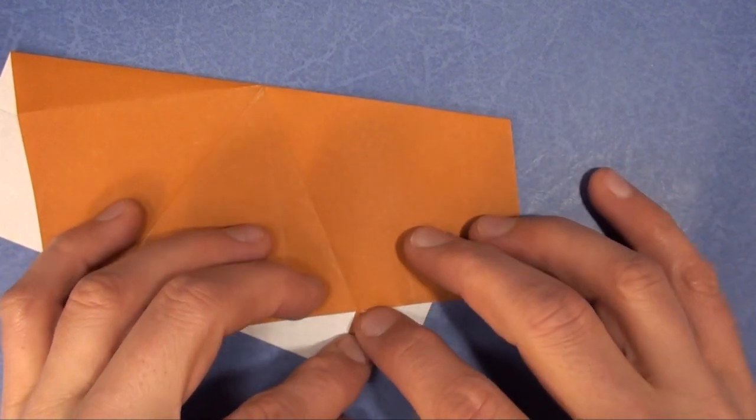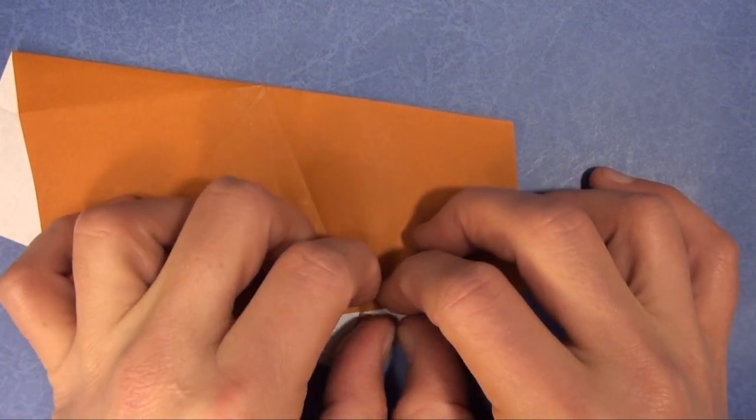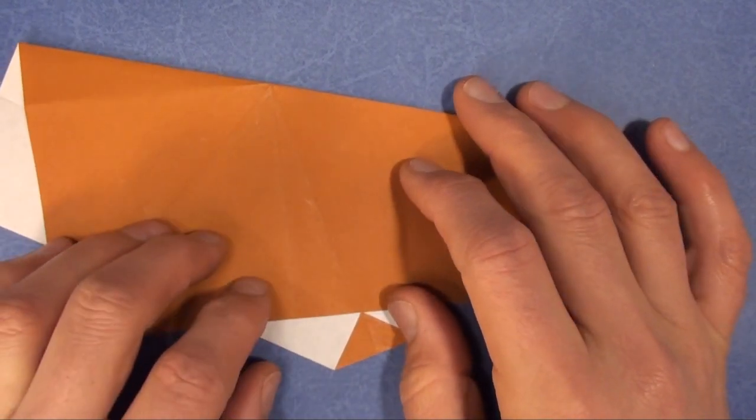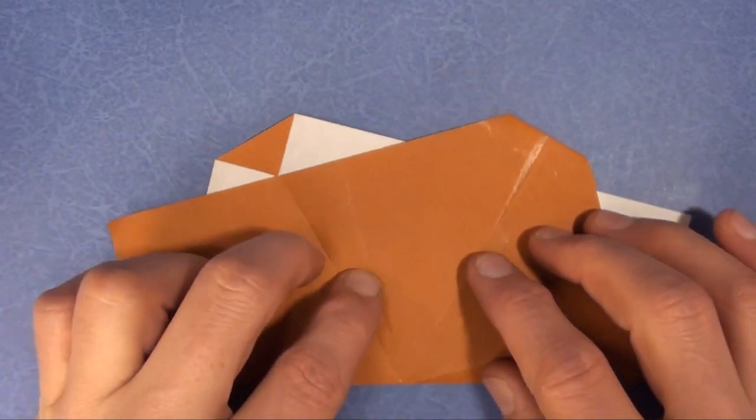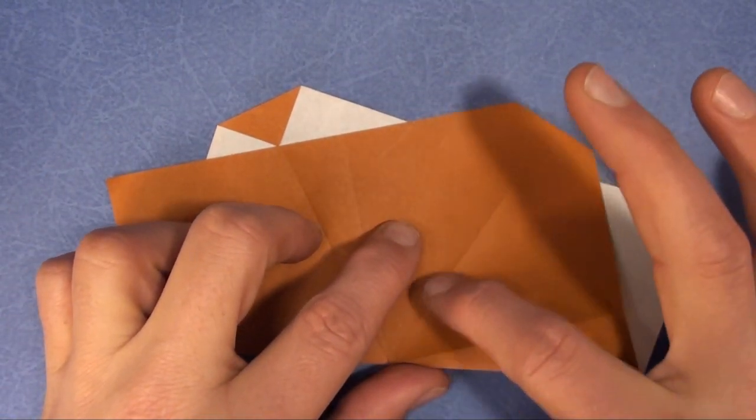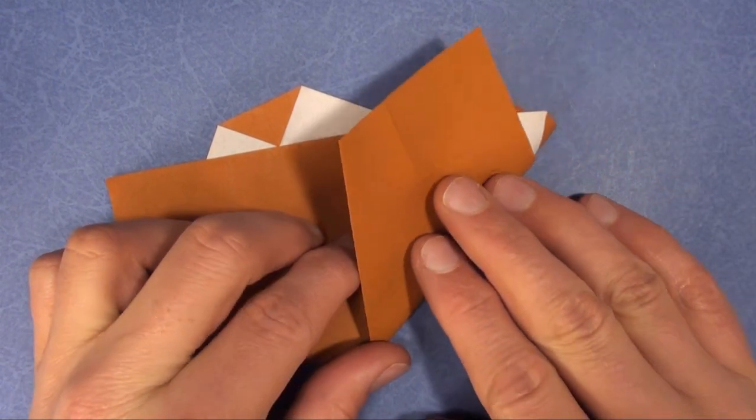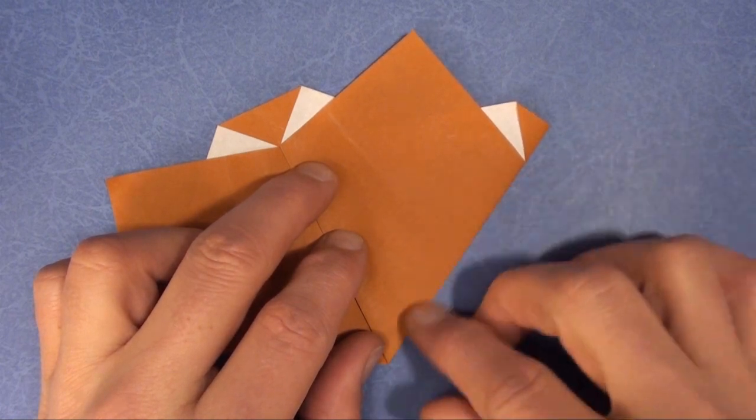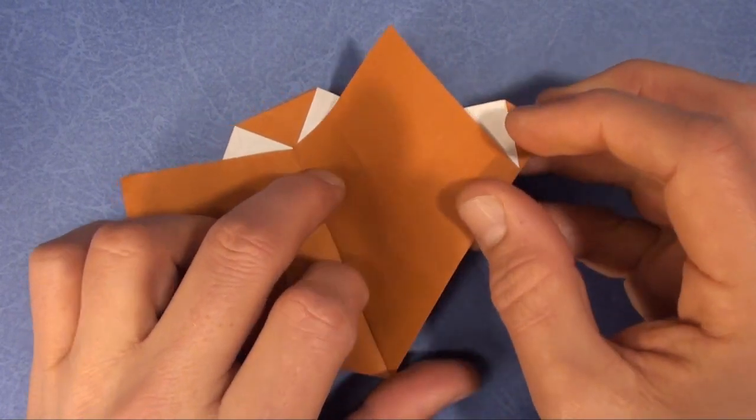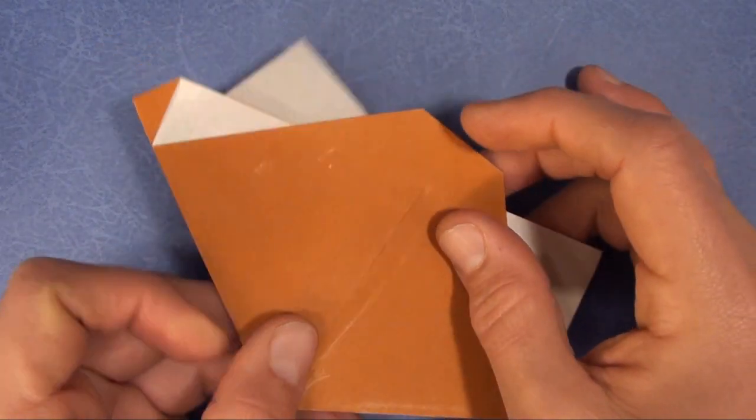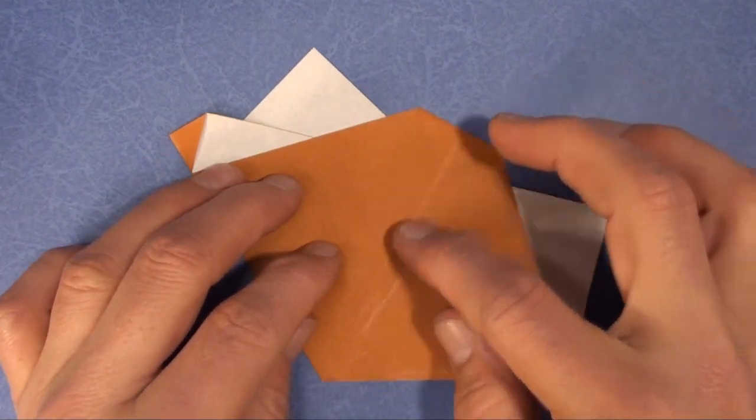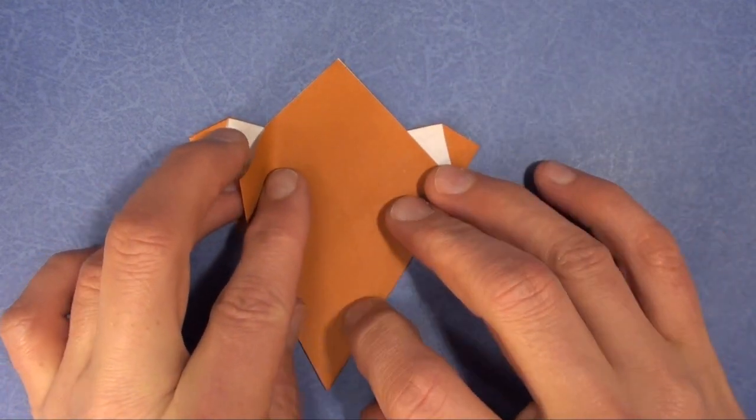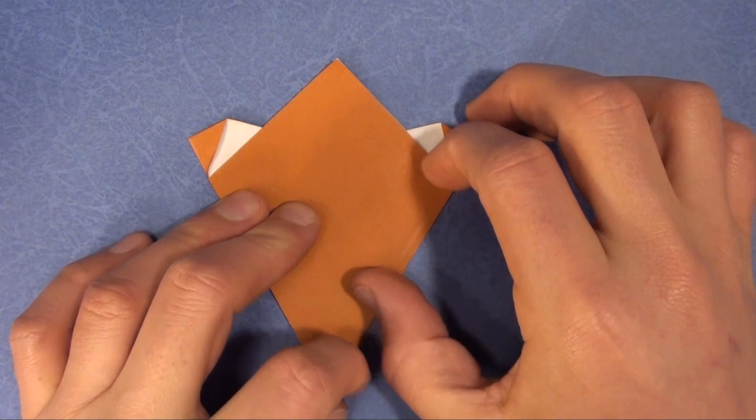Right half crease. And we're going to fold along this crease. Fold it up like that. Turn it over. And we're going to do the same thing, fold on this crease like that.